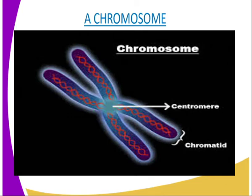Along the length of the chromosome is a series of structures called genes. They are too small to be seen even with a powerful microscope. They determine the characteristics of the cell and its progeny. Genes are made of a chemical substance called DNA — deoxyribonucleic acid — which contains coded information or instructions that indicate the characteristics of the offspring, for example whether male or female.